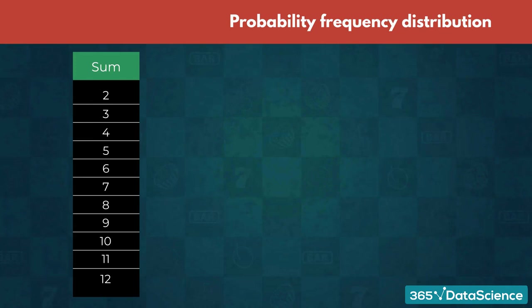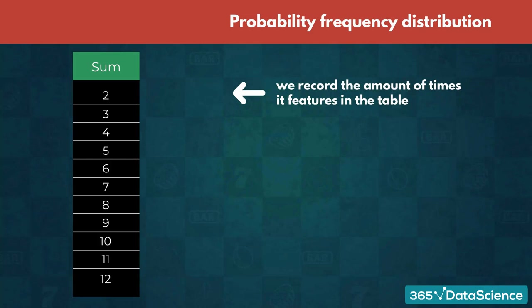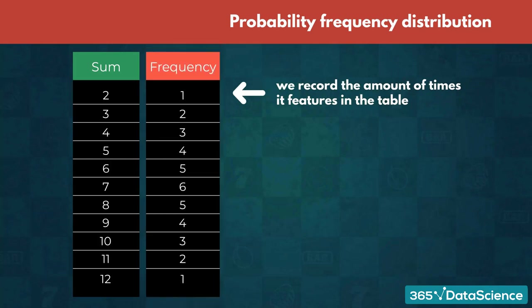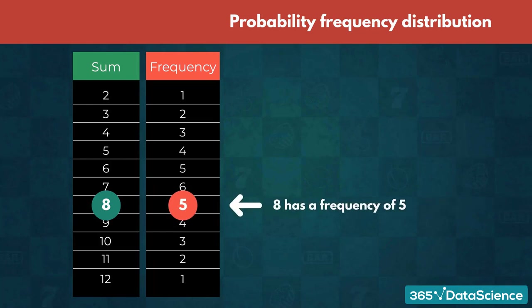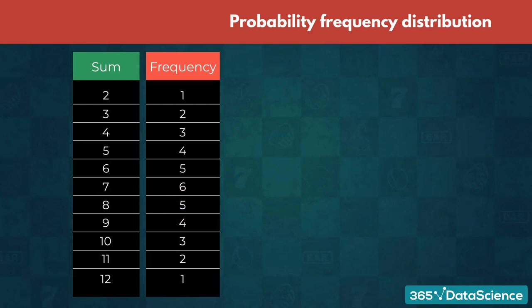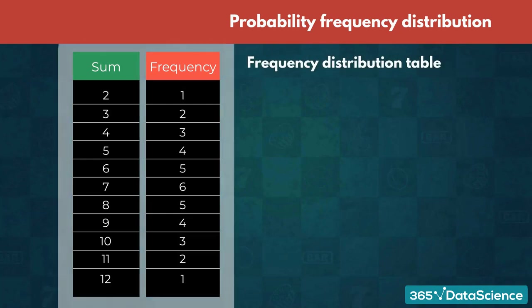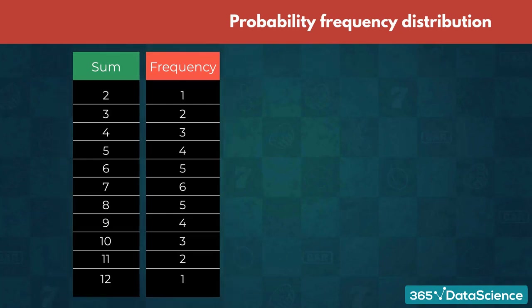Using the sample space table we already constructed, for each unique sum, we record the amount of times it features in the table. This value is known as the frequency of the outcome. For example, getting a sum of 8 in 5 different cases means that 8 has a frequency of 5. If we write out all the outcomes in ascending order and the frequency of each one, we construct a frequency distribution table. By examining this table, we can easily see how the frequency changes with the results.